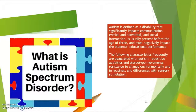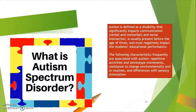What is autism spectrum disorder? We all know it as autism — it is a disability that significantly impacts communication, both verbal and nonverbal, and social interaction. It is usually present before the age of three and most negatively impacts the student's educational performance. Characteristics frequently associated with autism include repetitive activities, stereotyped movements, resistance to change environmentally and in routines, and differences with sensory stimulation.